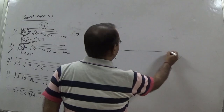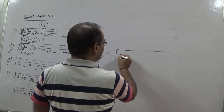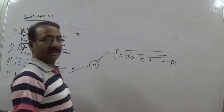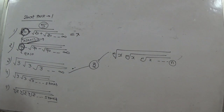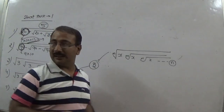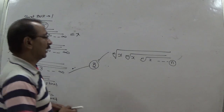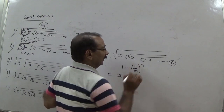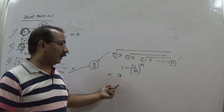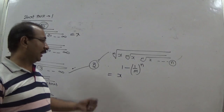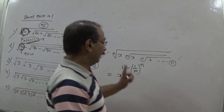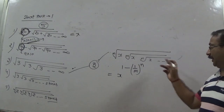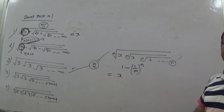For the fourth and fifth question types, here is the standard trick. Suppose you have the mth root of x, repeated n times in multiplication. The final value is: x raised to the power (1 − 1/m)^n. You write the base number x, and raise it to the power (1 minus 1/m) raised to n.